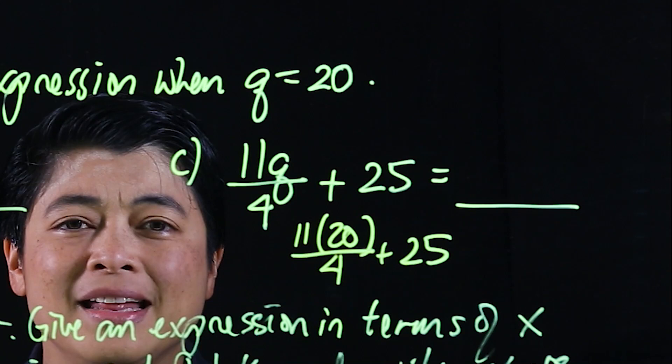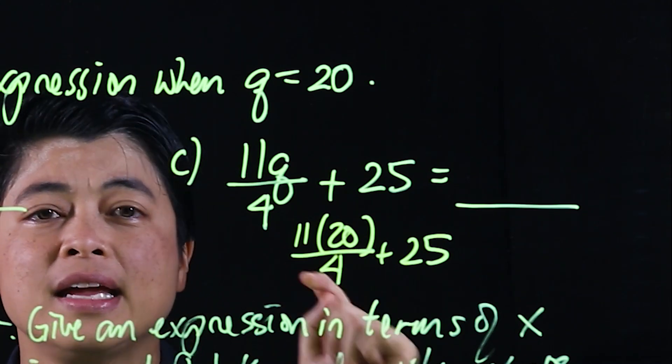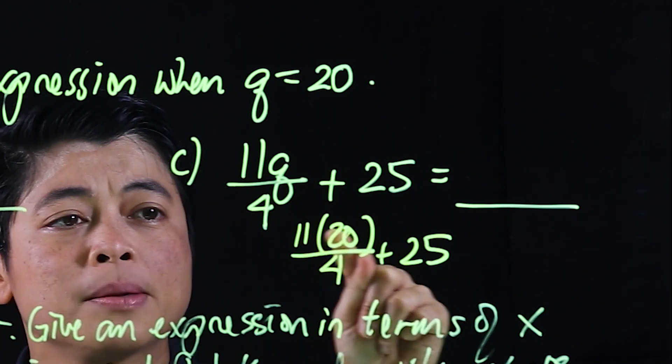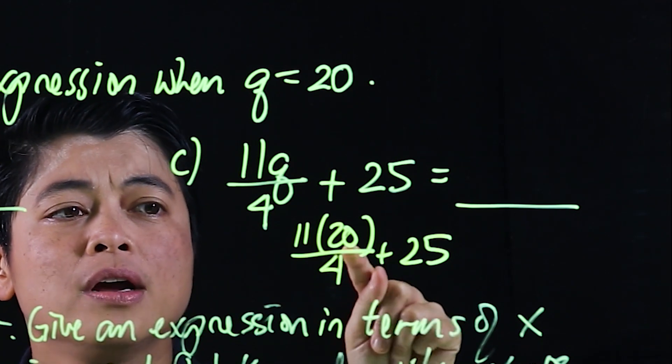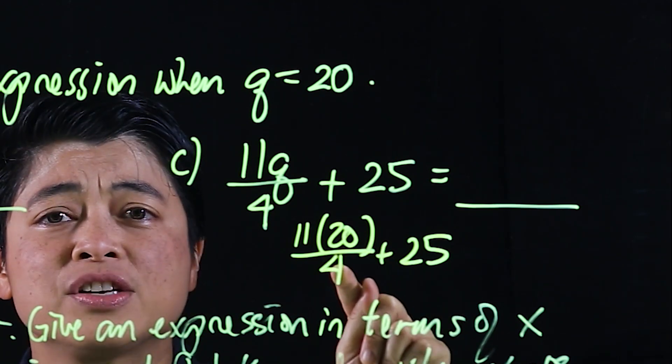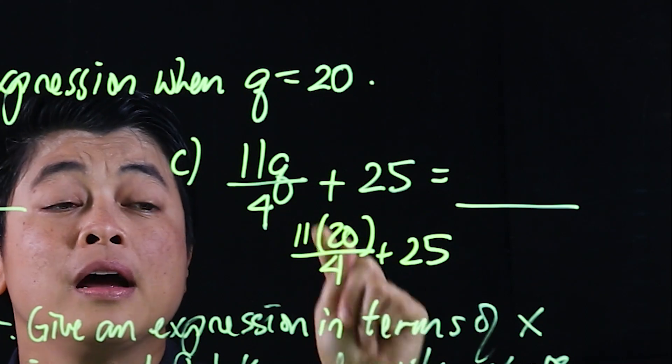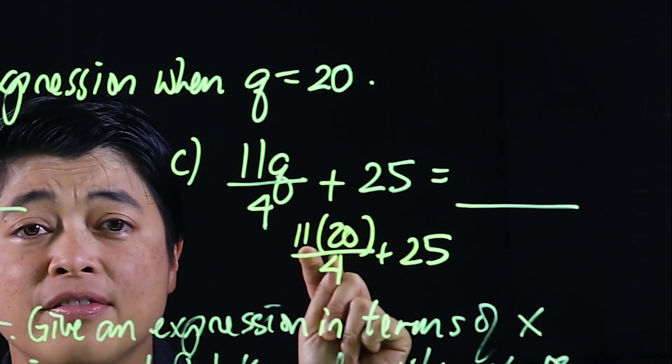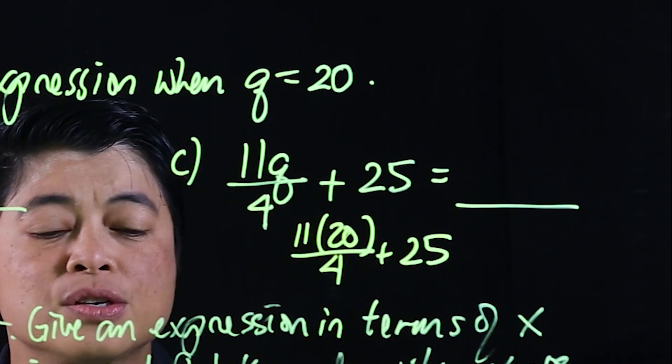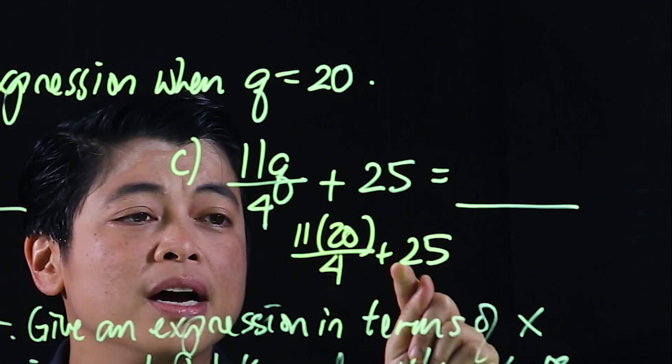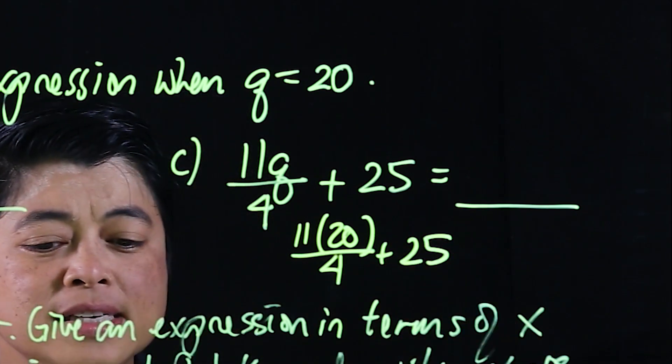So if we were to do this mentally, the idea is to just either multiply that and then divide or we can do 20 divided by 4, which is 5, which is 5 times 11, which is 55. So 55 plus 25 is 80.